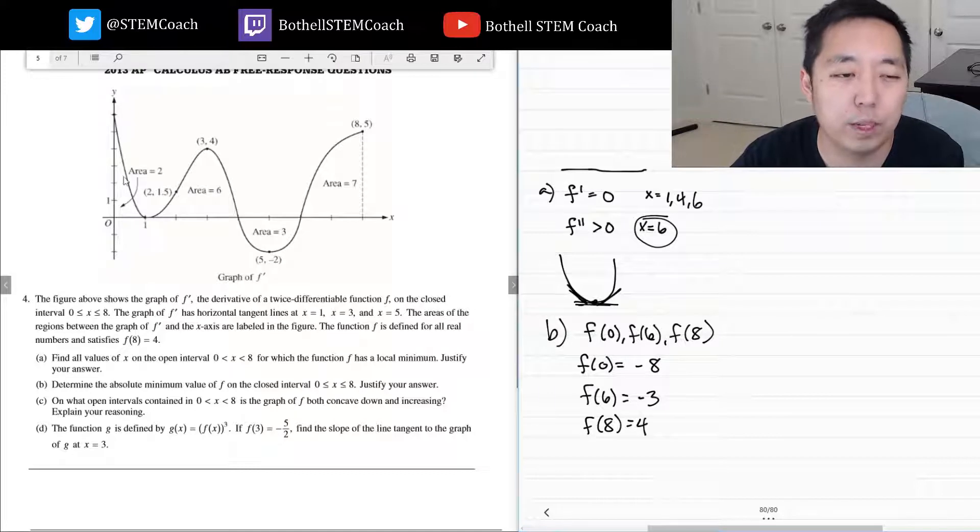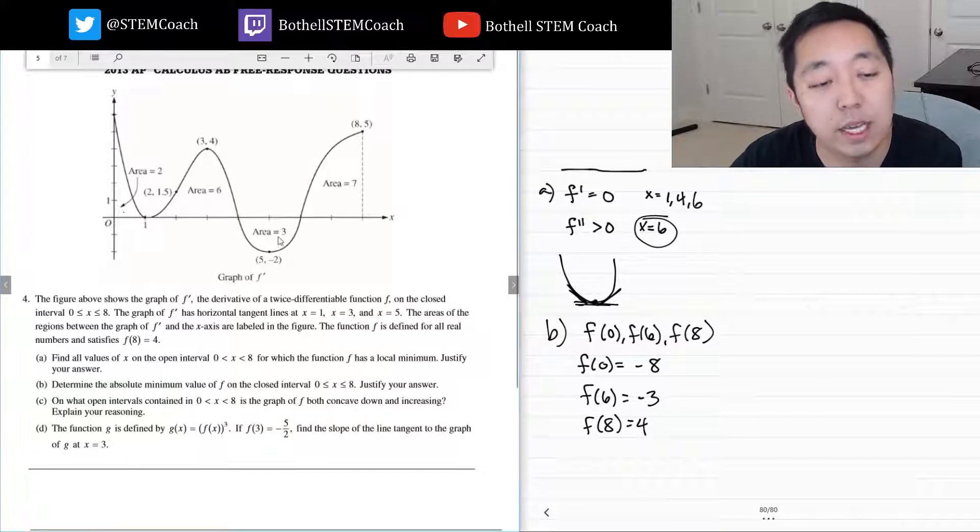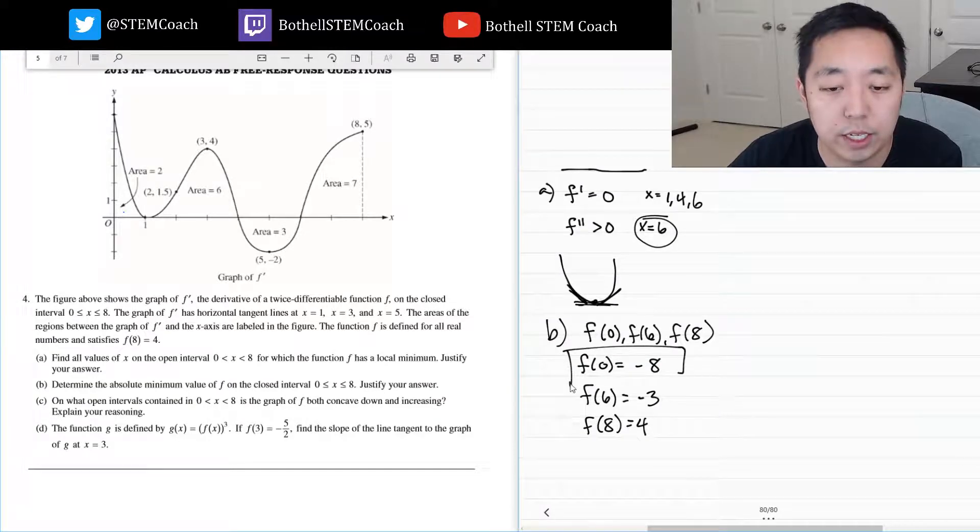Let's work it backwards. If f of 0 is minus 8, then to get to f of 6, I have to add all these areas. So 2 plus 6 is 8, 8 minus 3 is 5. So 5 plus negative 8 is negative 3. Here it's negative 3 plus 7, we get to 4. So the absolute minimum is this one, negative 8.